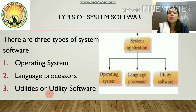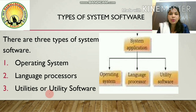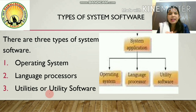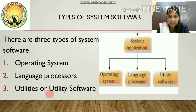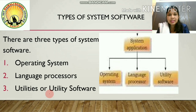There are three types of system software: first is operating system, second is language processors, and third is utilities or utility software. That's all for today's class. In the next class I'll explain all these categories and their examples as well. For now, go through all the slides and try to write the answers.